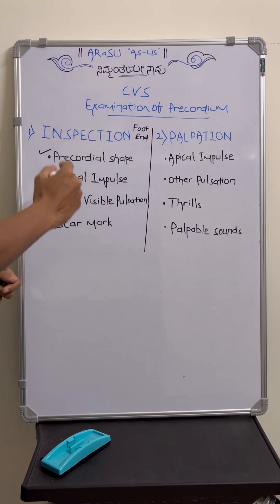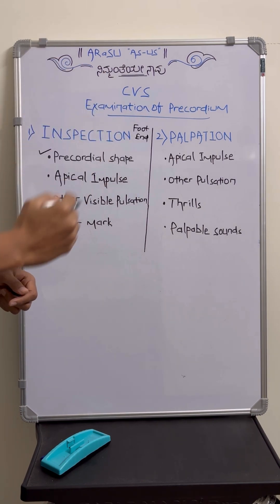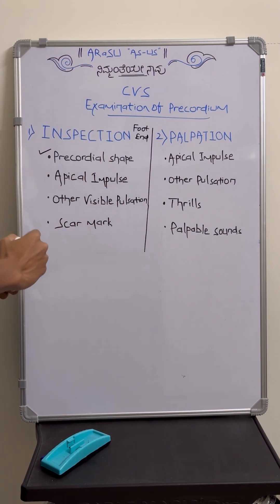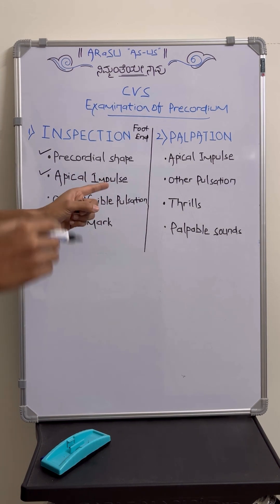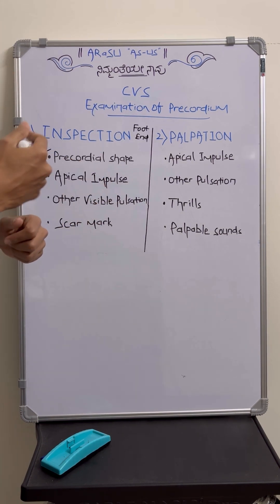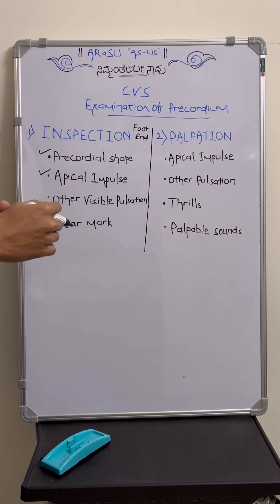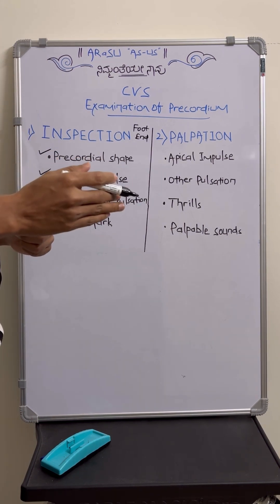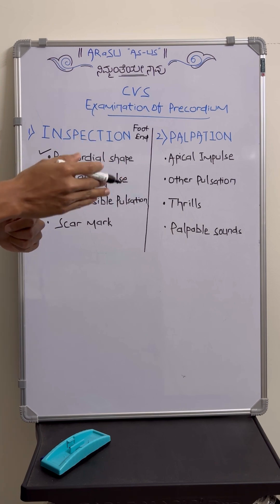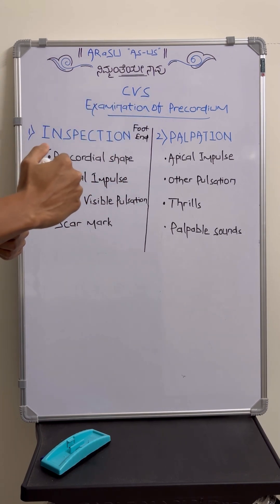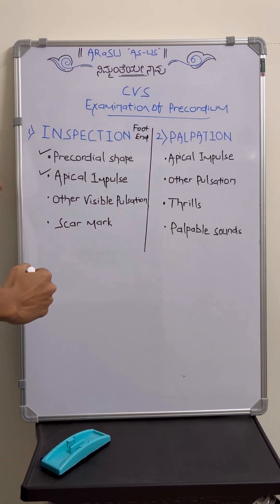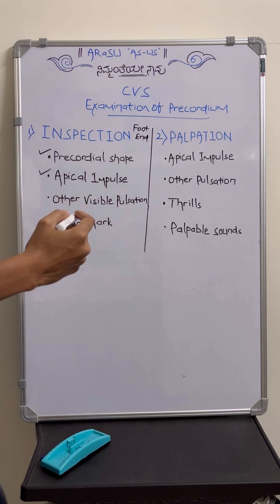Then comes apical impulse. Again you are standing at the foot end, trying to visualize the apical impulse. The normal location of the apical impulse is left fifth intercostal space, 0.5 to 1 centimeter medial to the mid-clavicular line. If you are not able to visualize the apical impulse in the supine position, then you need to proceed with alternate positions.